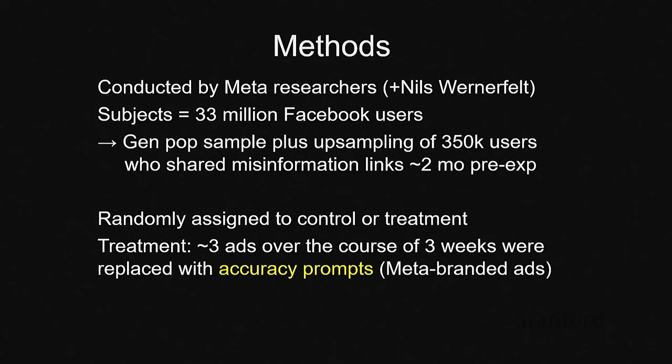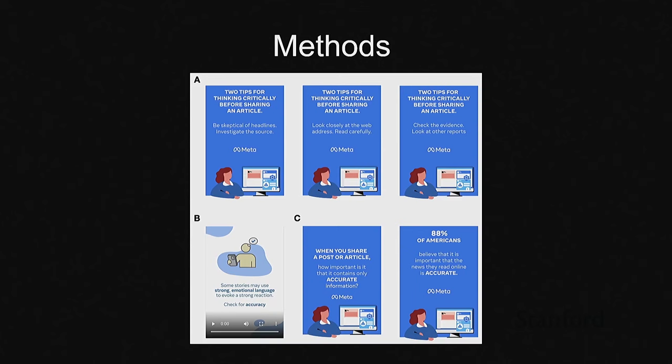Whichever arm participants were in, they basically received about three ads over three weeks — roughly one ad per week — where the normal ad Meta would have shown them was replaced with an accuracy prompt ad. These were Meta-branded ads. They looked like digital literacy tips, saying things like 'two tips for thinking critically before sharing an article.' When you share an article, 80 percent of Americans think it's important to only share accurate things. Some stories contain emotional language — check for accuracy. That sort of thing.